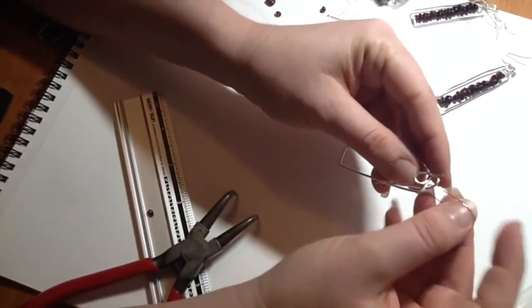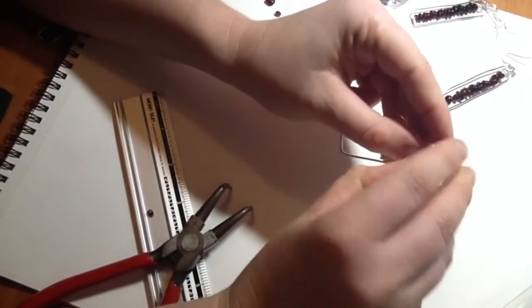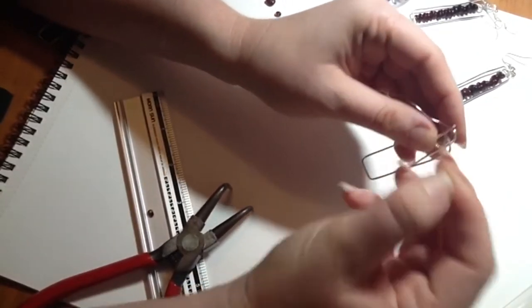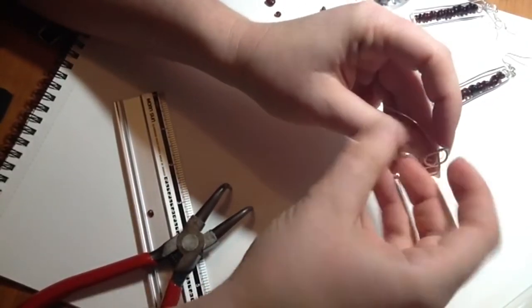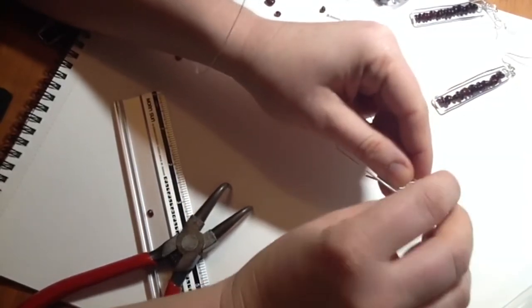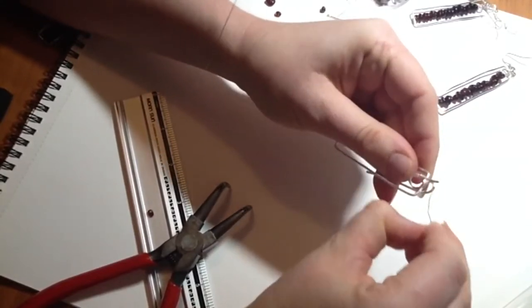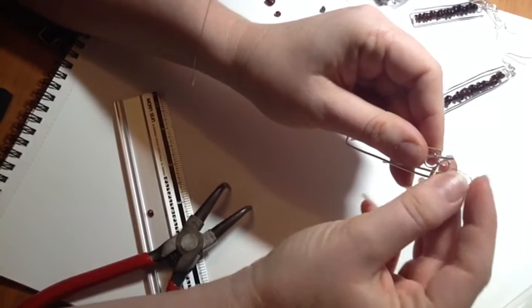Now what I'm going to do is just thread my 26 gauge wire between those two loops and just pull them together. So I'm going to go around about five times.